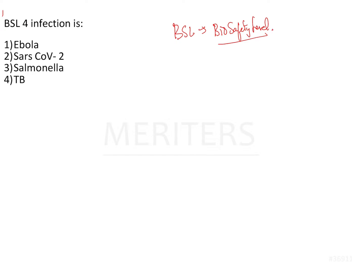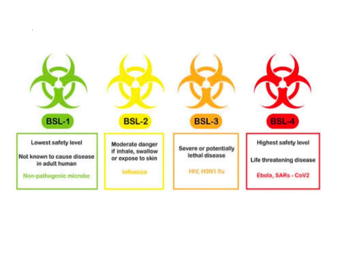Each BSL has particular characteristics and particular organisms associated with it. BSL 1 is the lowest safety level — it is not known to cause any disease in human beings. The best example is E. coli. These agents are not associated with any disease in humans. Organisms include E. coli, skin bacteria, and yeast.